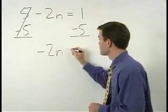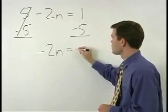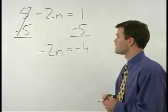On the right side we have 1-5 which simplifies to negative 4.